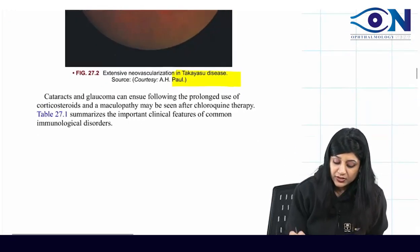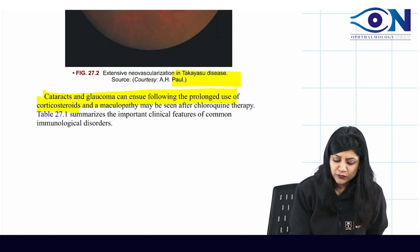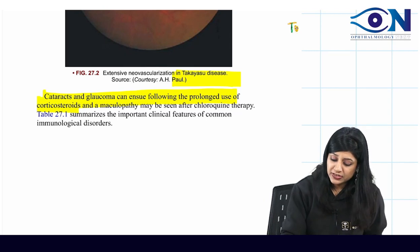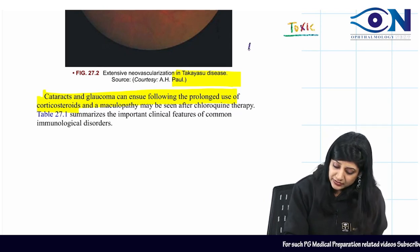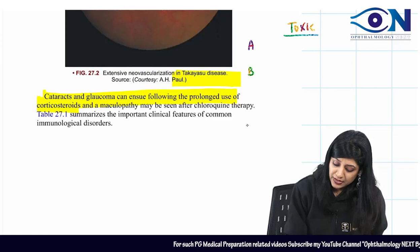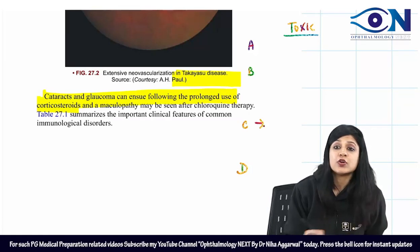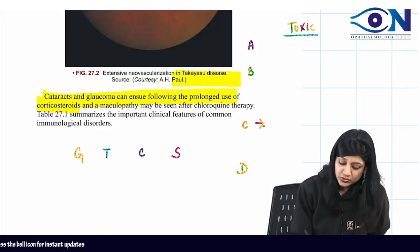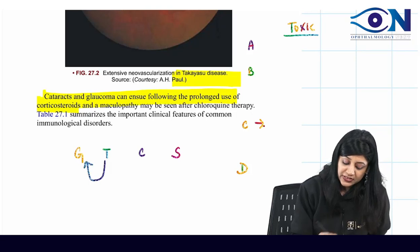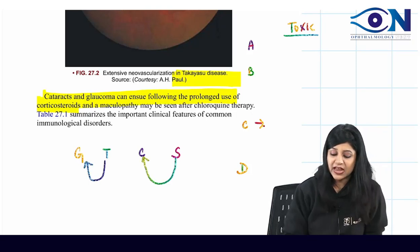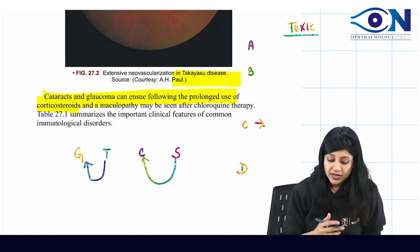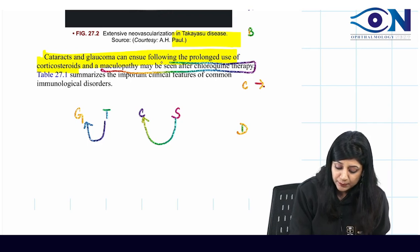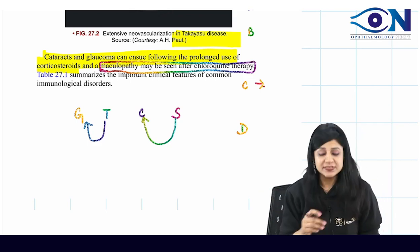Cataract and glaucoma can result from prolonged use of corticosteroids. Topical steroids can result in glaucoma while systemic steroids can result in cataract — an important point we keep reading. Also, chloroquine therapy can lead to bullseye maculopathy.